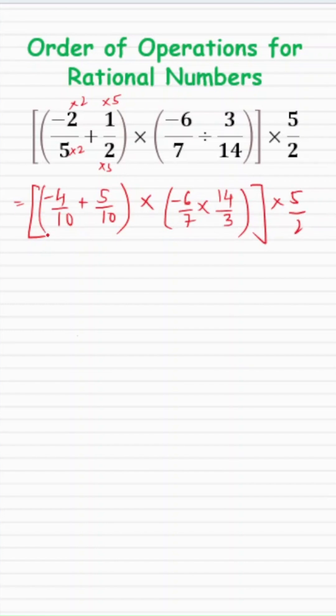So in the first one, I would be getting minus 4 tenths plus 5 tenths will give me 1 tenth multiply by. Now I can divide this negative 6 with 3 and I'll get negative 2, and divide 14 with 7 to get 2. So my answer for this bracket is just negative 4 multiply by 5 over 2.